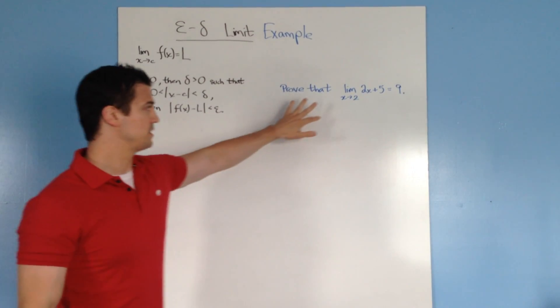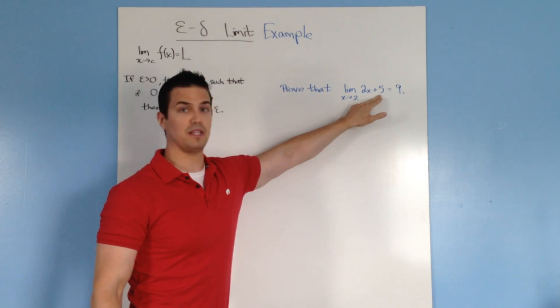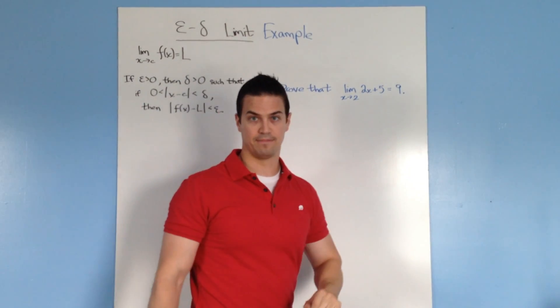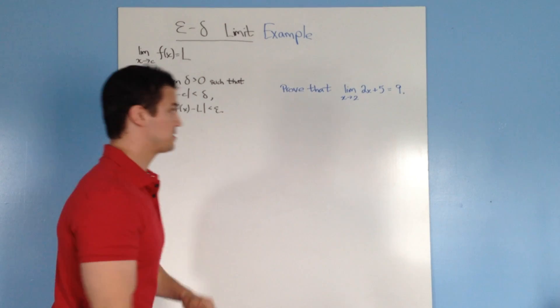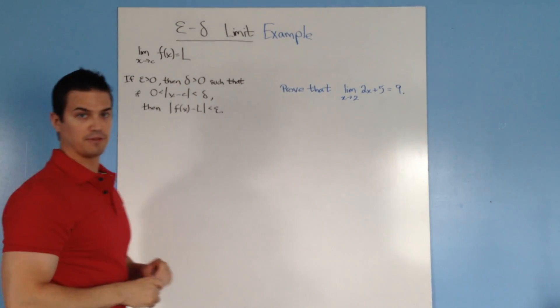So an example problem might look like this: prove that the limit of 2x plus 5 as x approaches 2 equals 9. We're going to solve this problem and prove it using our definition right here.